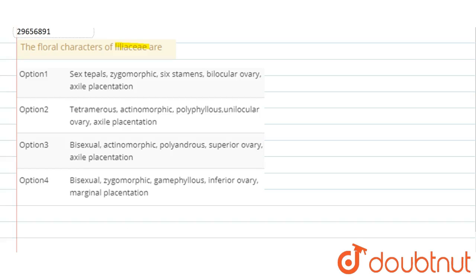Here, we have a question about the Liliaceae family floral characters. First, let's see what is the Liliaceae family. These are flowering plants, monocot plants. These are typical monocotyledonous plants. Generally we get herbs. The underground stem is modified into rhizome, corm, or bulb, modified for food storage.